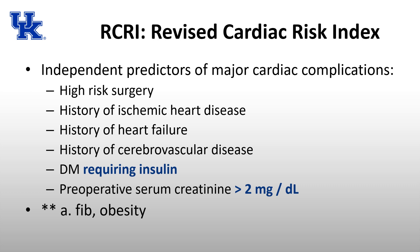The second independent predictor is a history of ischemic heart disease, not limited to just an MI. It also includes a positive exercise stress test, chest pain believed to be due to myocardial ischemia, regular use of nitrates, or pathologic Q waves on EKG — all of these give you one point. If a patient had coronary disease and was completely revascularized, you do not get a point because they no longer have coronary disease. A history of heart failure gets you one point. A history of cerebrovascular disease, whether a stroke or TIA, gives you one point. Diabetes specifically requiring insulin gives you one point — if not on insulin, no point.